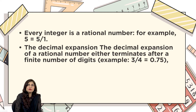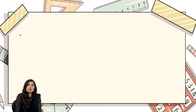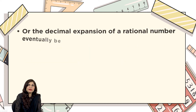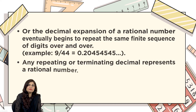The decimal expansion of a rational number either terminates after a finite number of digits. For example, if you look at the fraction 3/4, the decimal expansion of this number is 0.75, so it's a rational number.